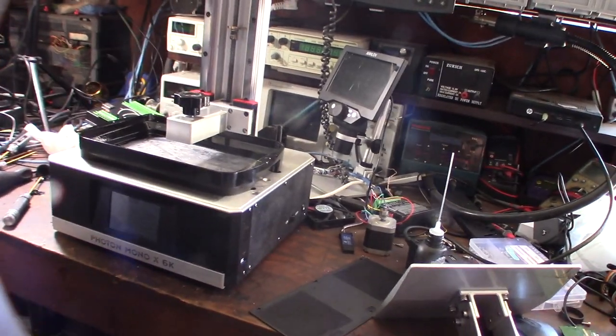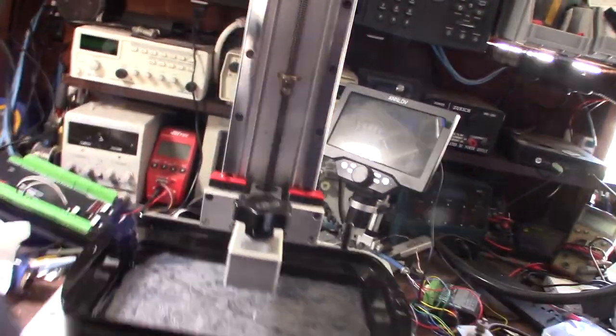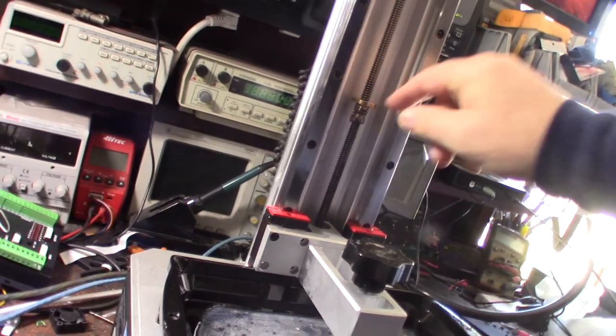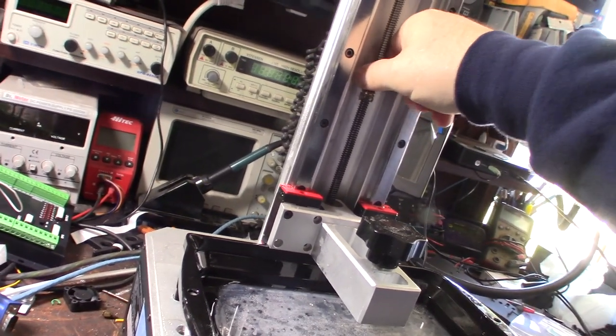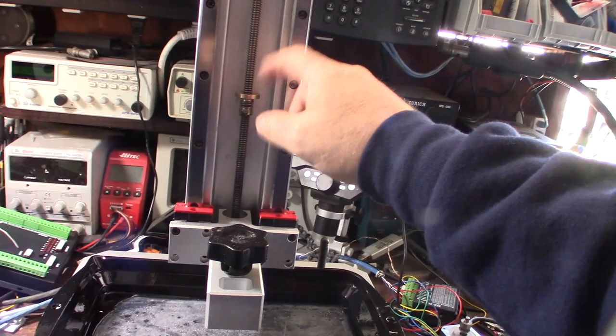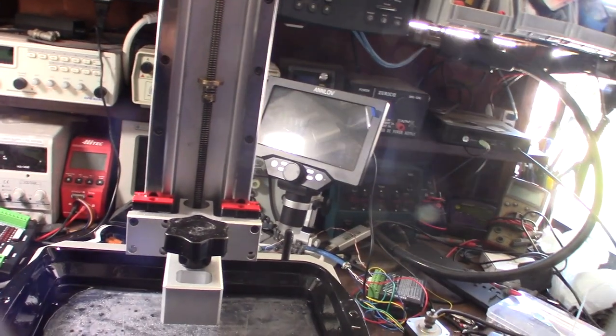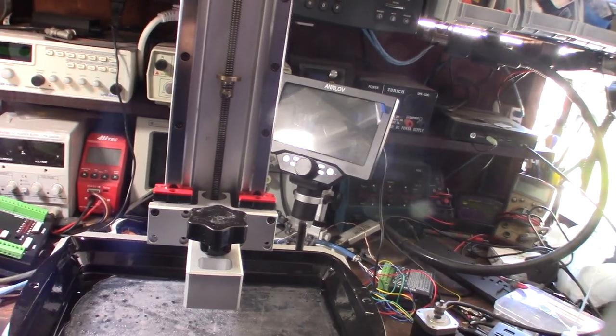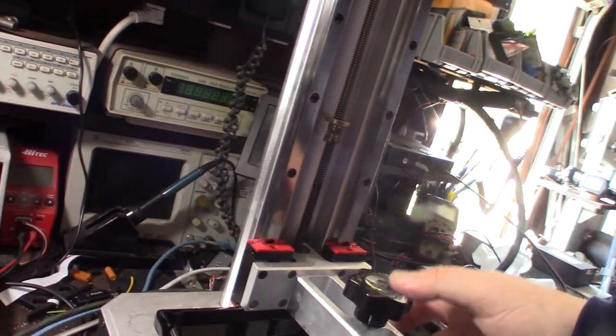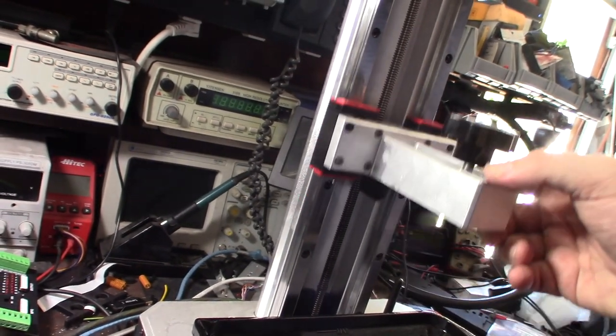This one came in, the guy only used it a couple times and the issue is the z-axis stopped moving. It's really really stiff, even the locking nut. But this is a very well constructed printer - they use anti-backlash nut, look at the size of these linear rails. That's pretty high quality.